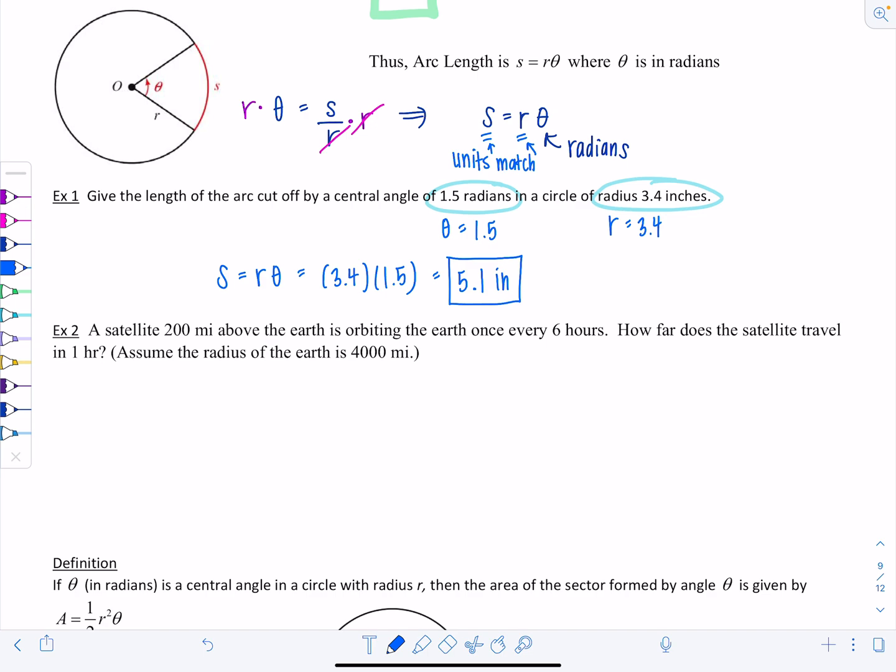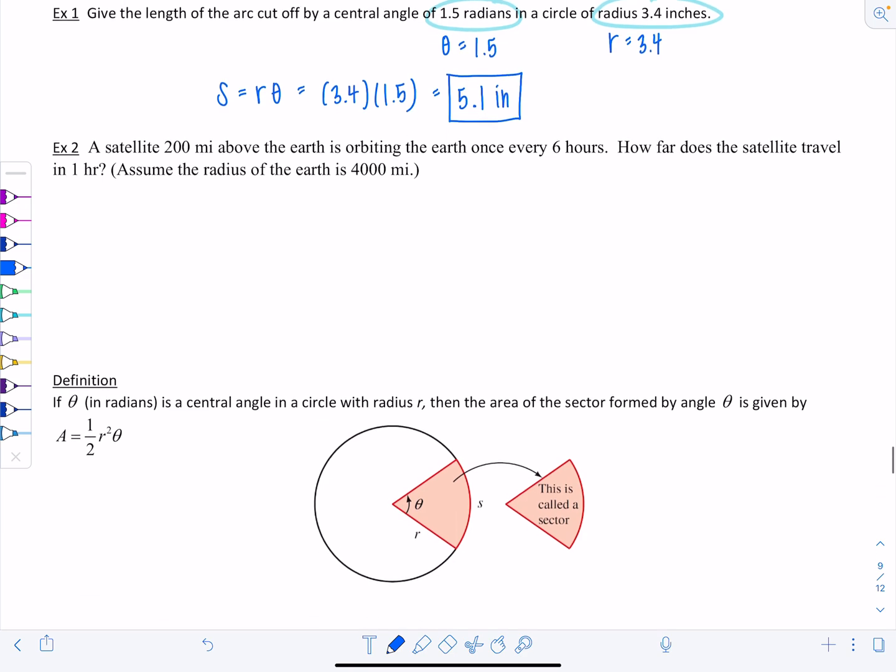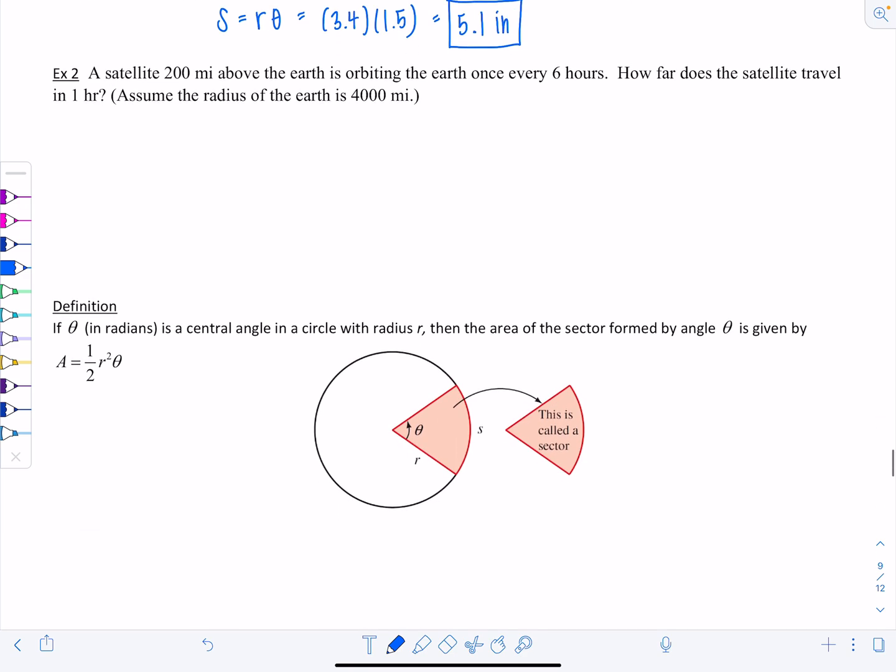Example 2. A satellite 200 miles above the Earth is orbiting the Earth once every six hours. How far does the satellite travel in one hour? Assume the radius of the Earth is 4,000 miles. Here's the Earth. The radius we're going to assume is 4,000 miles, and the satellite is another 200 miles above. The satellite's orbiting around the Earth.